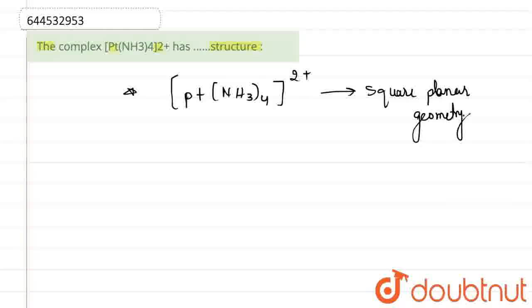In this geometry, you will observe there are only four sigma bonds around platinum with no lone pair.